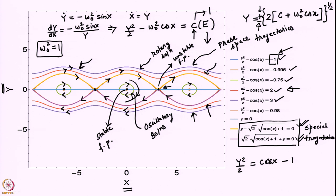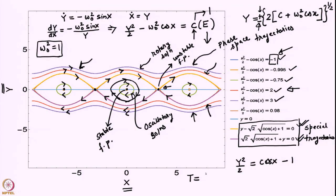For the oscillatory solutions, as we go from smaller to larger amplitude, what happens to the time period? Looking at this phase portrait, it is not obvious that the time period is independent of the amplitude. So the question is: is T a function of θ₀? Let us answer that question in an approximate manner.